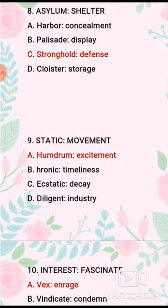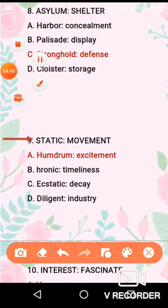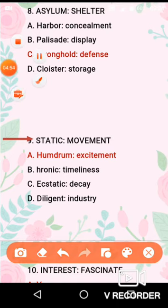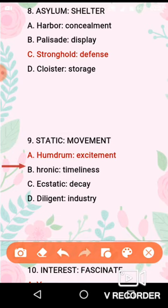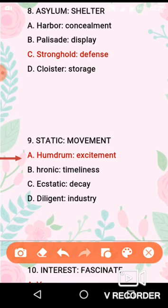Question No. 9 is static and movement. Static means at rest and movement means in motion — these are two opposite states. The similar analogy is option A — humdrum and excitement. Humdrum means a state of being boring and feeling dull, which is the opposite of excitement. So question No. 9, option A is the correct analogy.